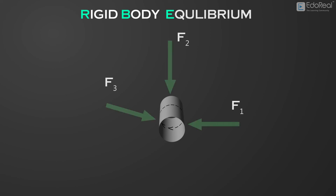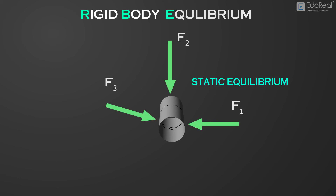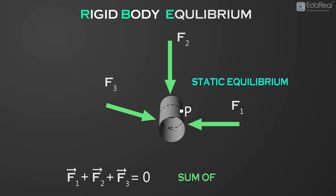If a body is in static equilibrium, the sum of the forces vectorially has to be equal to zero, and the sum of the moments about any point P has to be equal to zero.